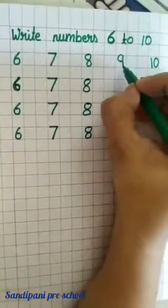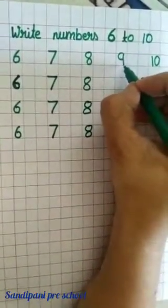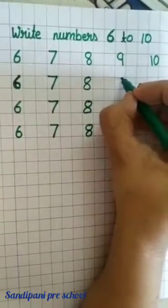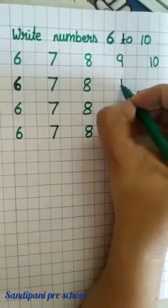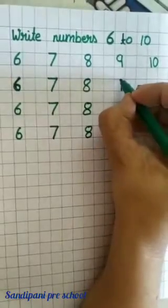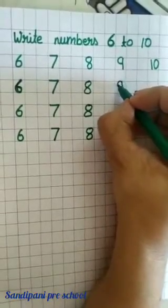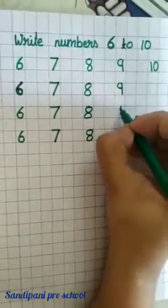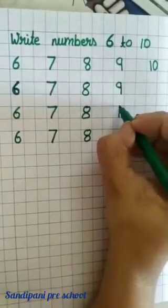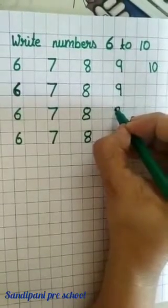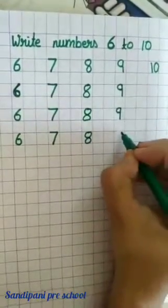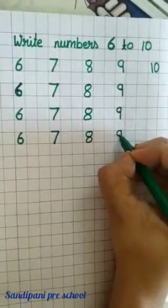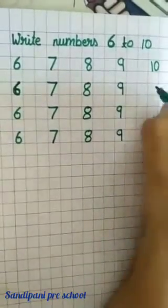Now, which number is this? Number 9. So, how will you write number 9? Standing line and curve, number 9. Standing line and curve. Standing line, curve, number 9.